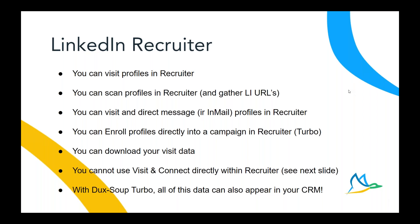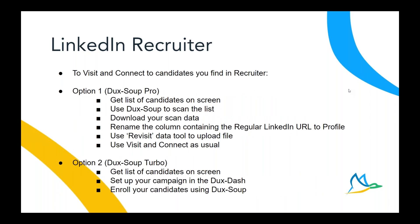If you're in Recruiter and want to visit and connect to candidates, you've got two options. If you've got Pro: get a list of candidates on screen, scan the list, download the scan, adjust the columns in your CSV file, then use the revisit data tool to upload the file and do visit-and-connect. If you've got Duck Soup Turbo: get a list of candidates on screen, set up your campaign, and enroll your candidates directly from Recruiter. Remember: when you visit a recruiter profile, there is no connect button — you can only connect in regular LinkedIn or Sales Navigator.